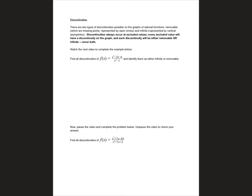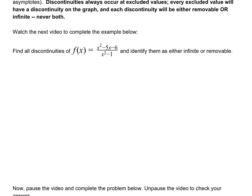Let's talk about discontinuities. Discontinuities are basically a break in a graph, and rational functions can have two different types of discontinuities: infinite, which looks like a vertical asymptote, and a hole, which looks like basically an open circle - a point that's been removed. We're going to talk about how to find these two types of discontinuities.